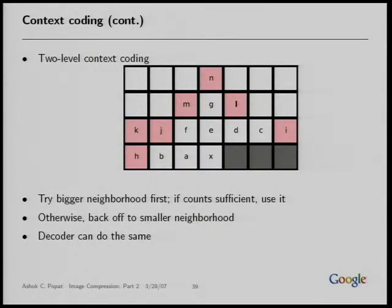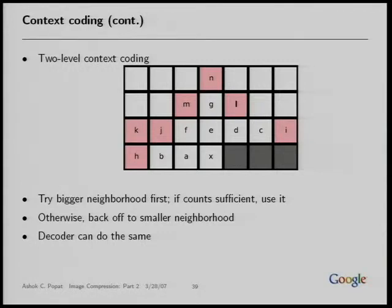Here's a variant called two-level context coding. I have a smaller neighborhood and a larger augmentation to that neighborhood. The encoder tries the bigger neighborhood first; if it has good statistics in the table for that configuration, it uses it. Otherwise it backs off to the smaller neighborhood. The decoder has exactly the same information the encoder used — it can look at the table and see if there are enough counts to make those probabilities reliable, and can be synchronized by making the same decision the encoder made.